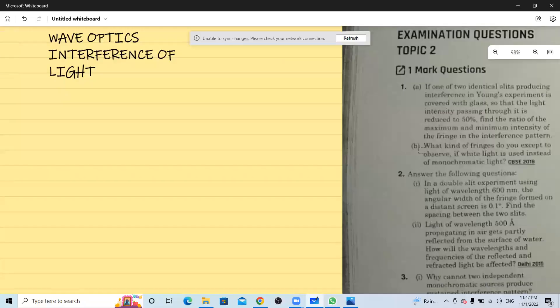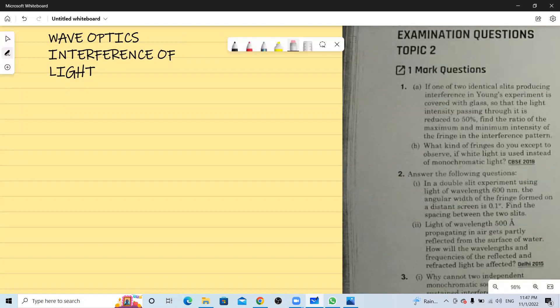Okay, now let us do second question. Question number 1b. What kind of fringes do we expect to observe if white light is used instead of monochromatic light? So if I use white light instead of monochromatic light in the Young's double slit experiment, what will happen?